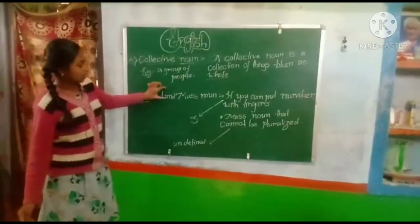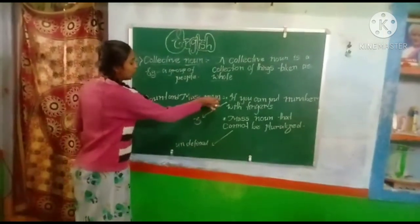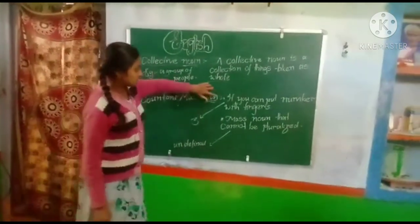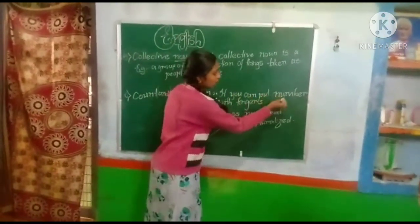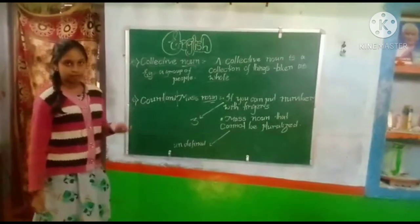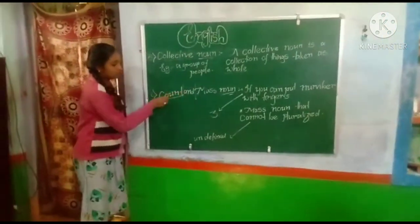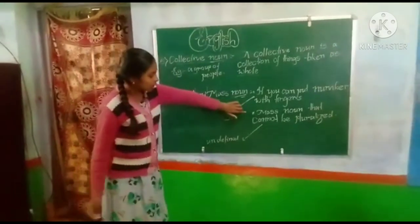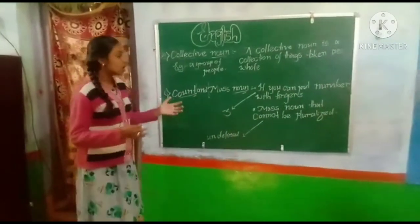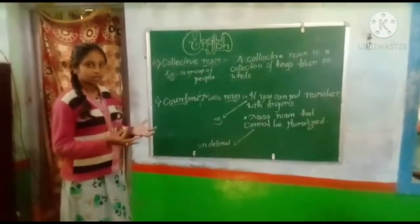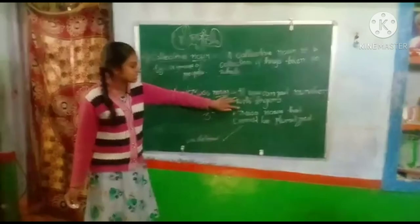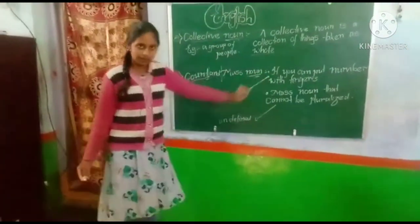Now let's go to count and mass noun. What is the difference between count noun and mass noun? First, count noun: if you can put a number with fingers — if we are able to count with our fingers — it is called a countable noun. Mass noun means things which we cannot count; the mass noun is undefined. Mass noun is also called uncountable or non-countable noun.